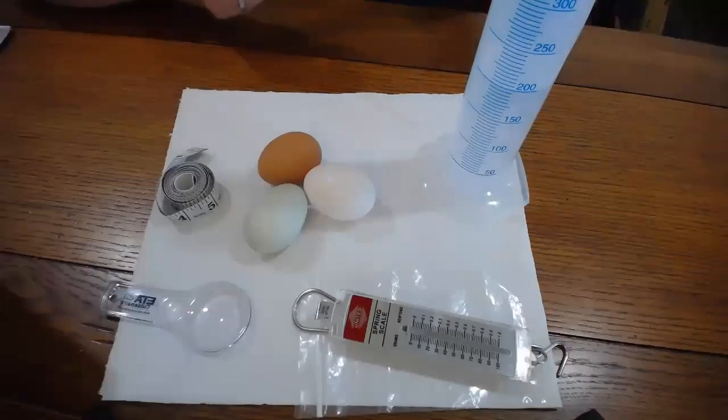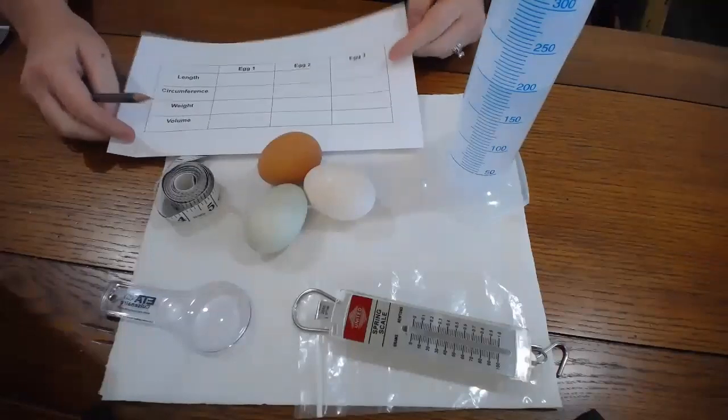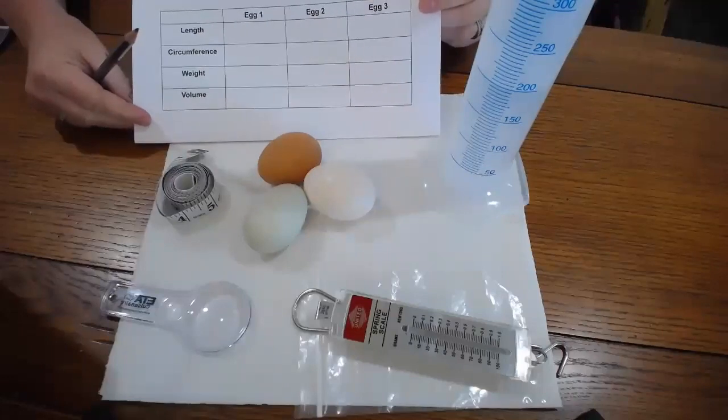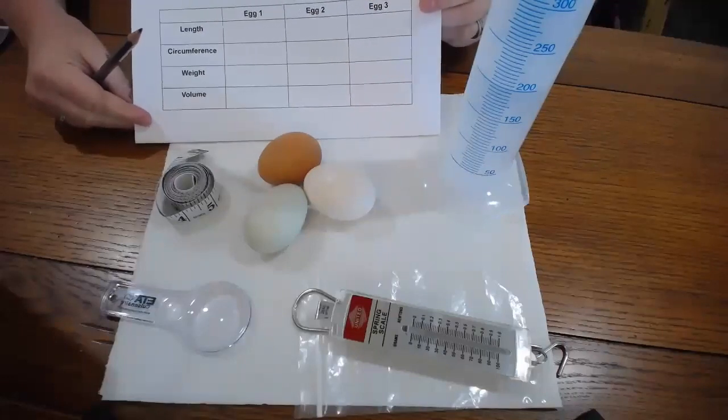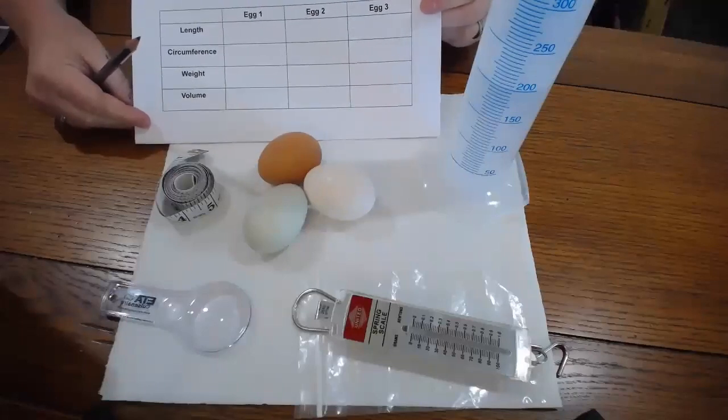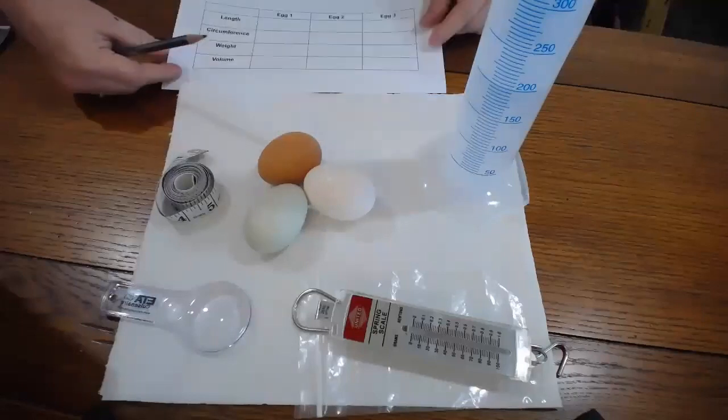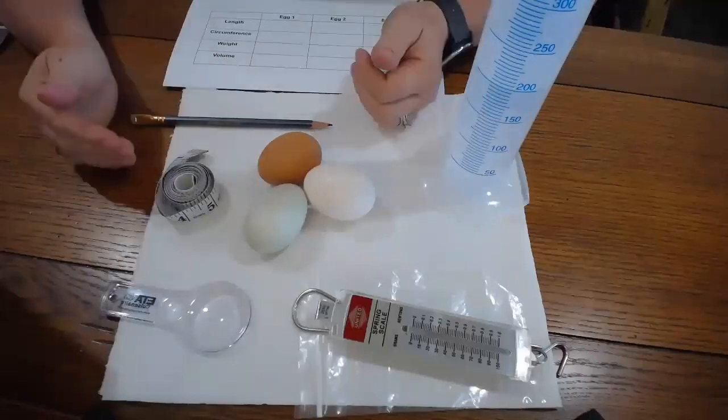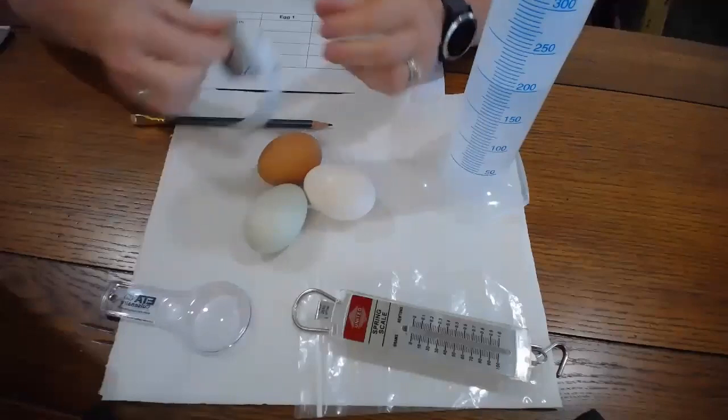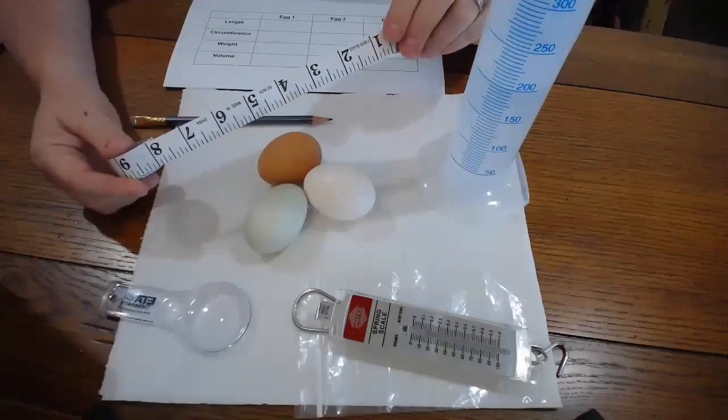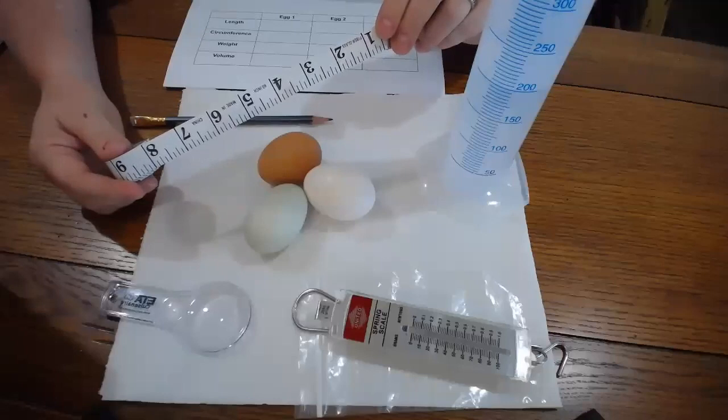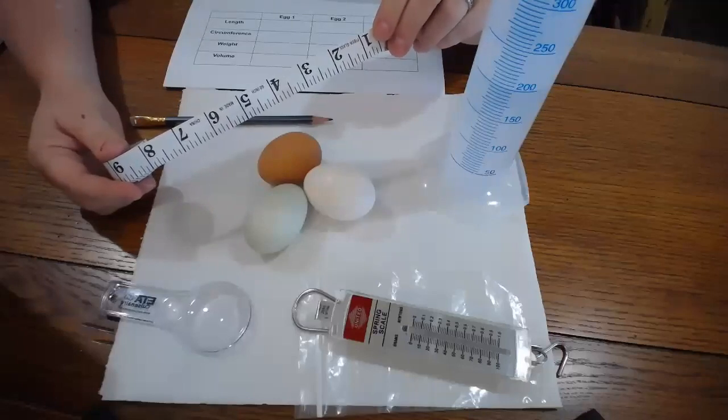First, I have a handy dandy chart here, and in that chart we are going to record length, circumference, weight, and volume, and some other observations if we think of them. When we are thinking about the length of an egg, which tool could we use to measure that? You are right. We are going to use this tape measure here to record the length of an egg. We can even use this tape measure to record its circumference.